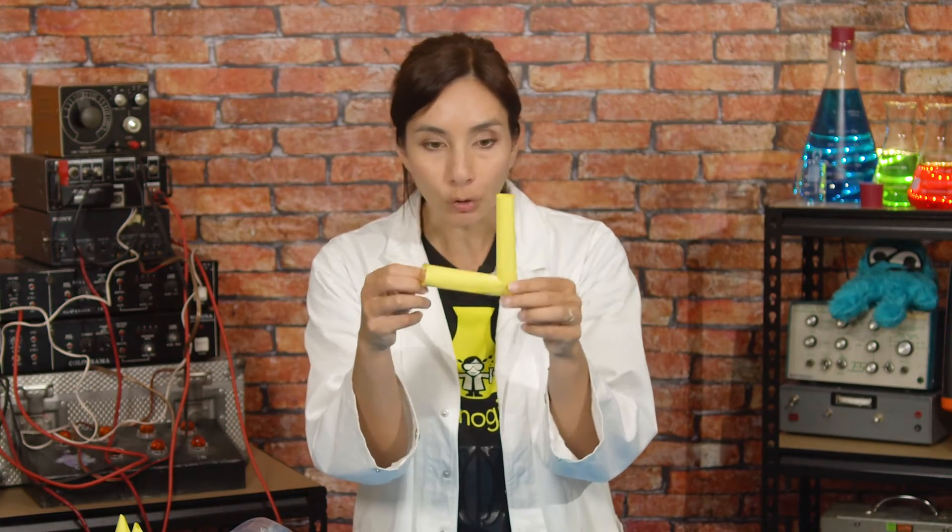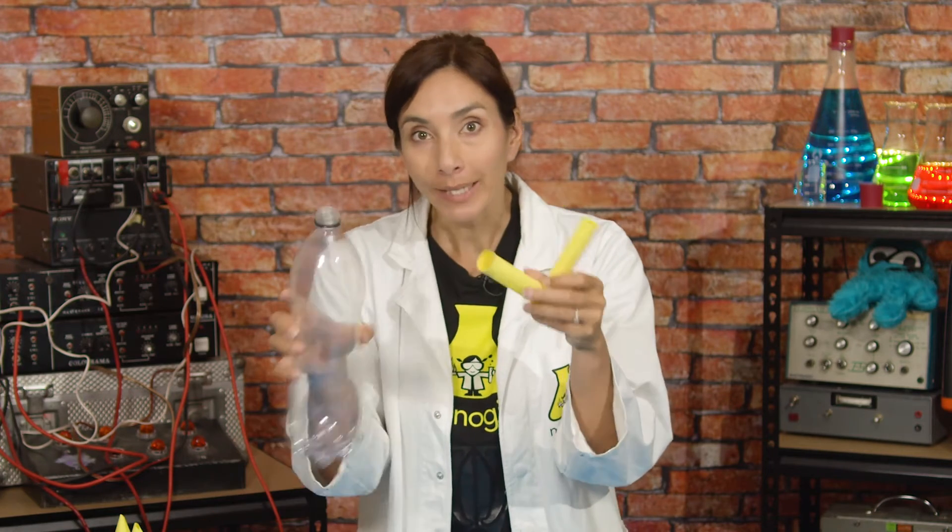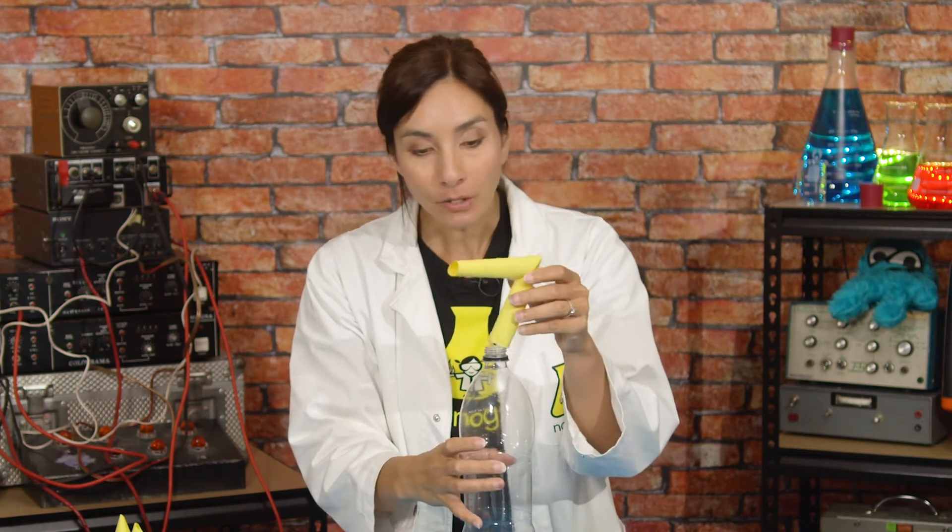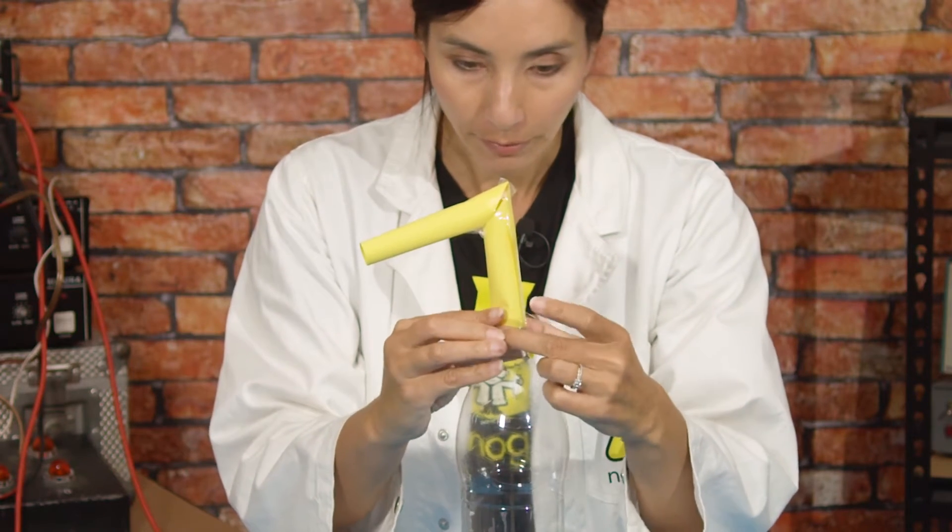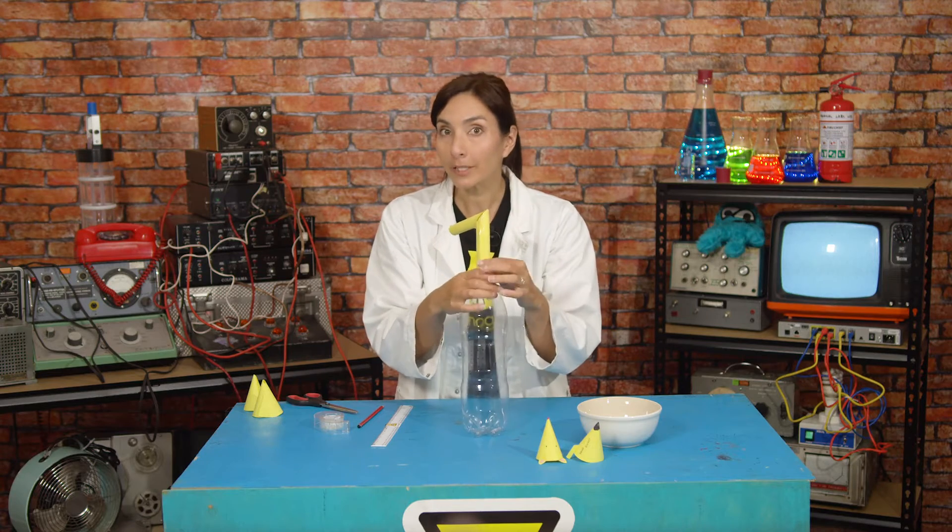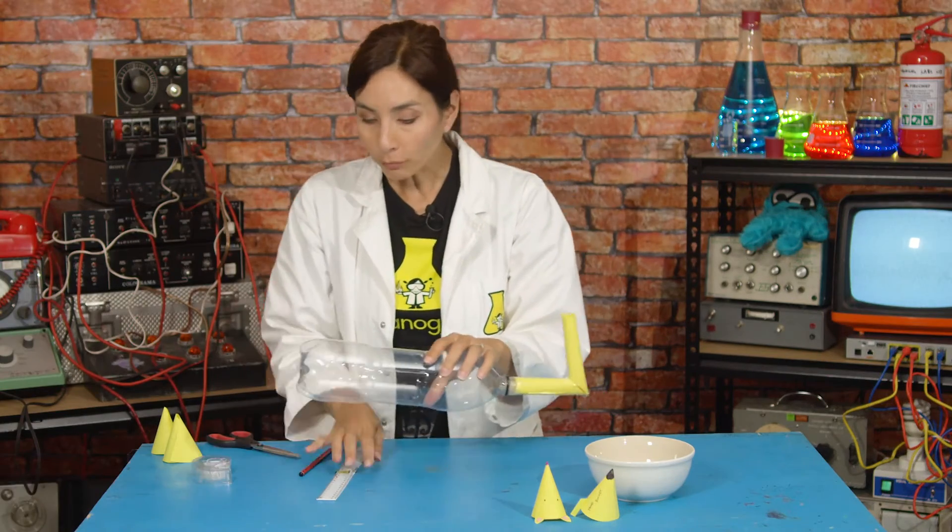So now we've got this angled joint here with some tape around the side, making sure no air gets in. I'm going to attach this to the end of our bottle with enough tape that no air can get in through there. Okay, so this is going to be our rocket launcher.